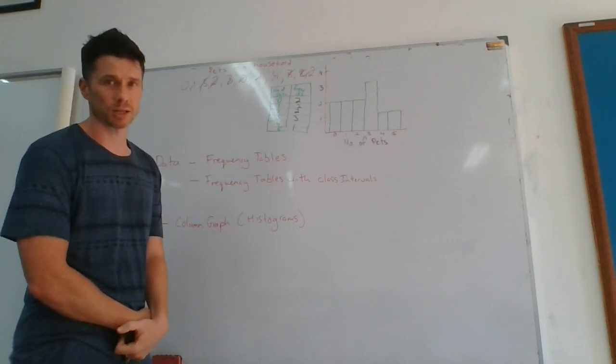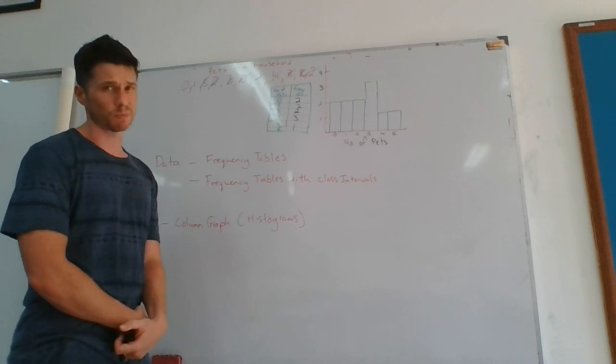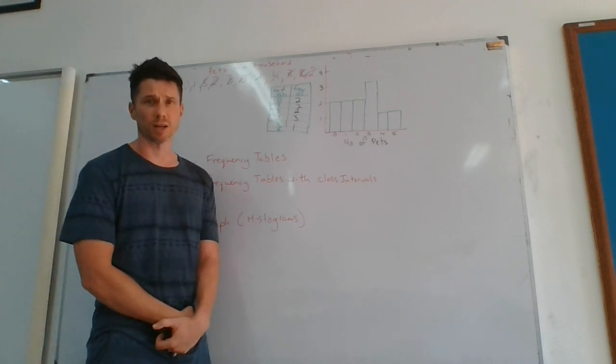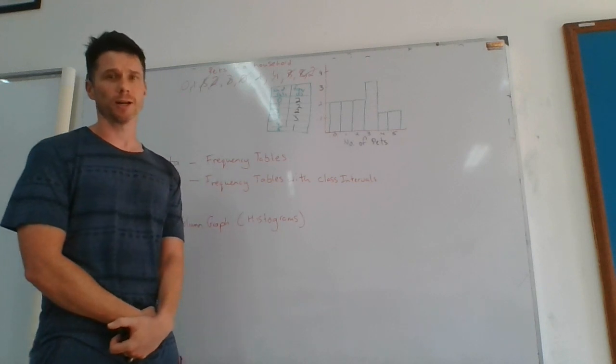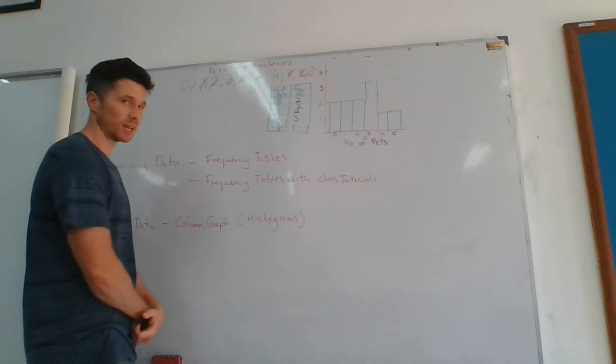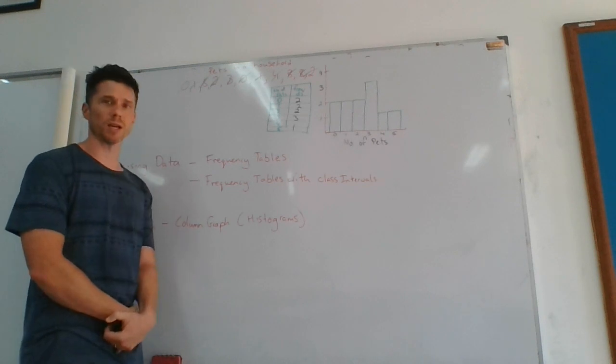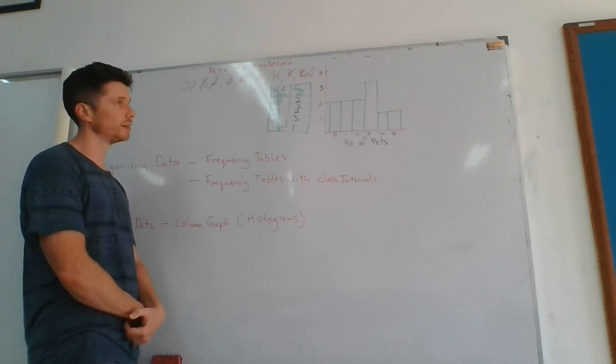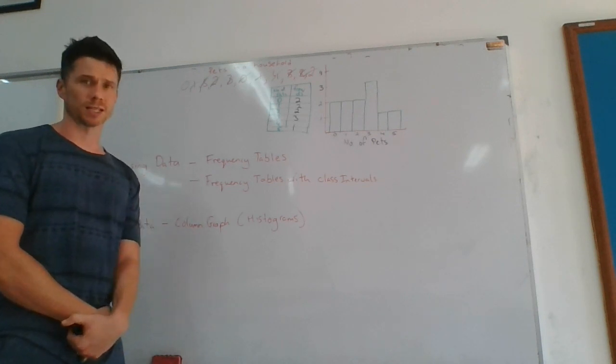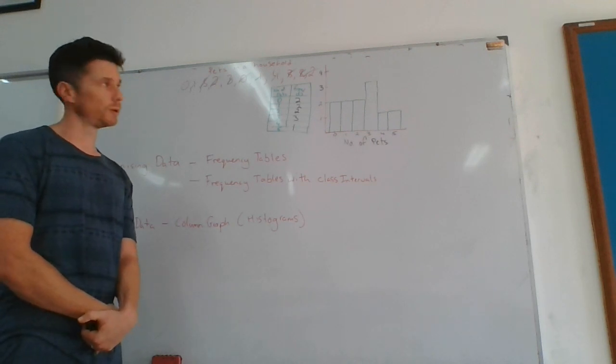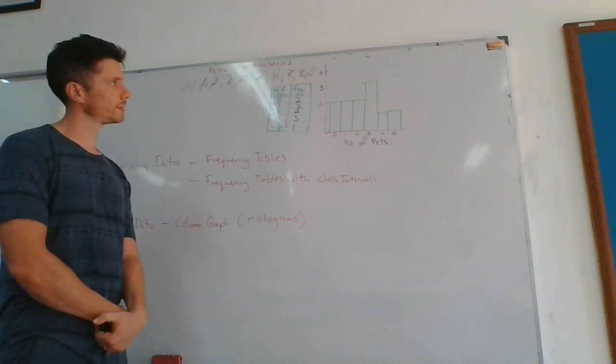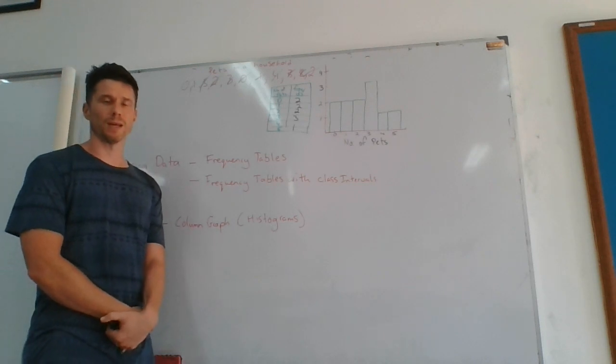If I saw something like 200 in here as one of my answers for number of pets in the household, I may start to think about it. That's something called an outlier. If you get a crazy value, but I think that this makes sense and I could say that this looks like a fairly acceptable selection of a sample of population.